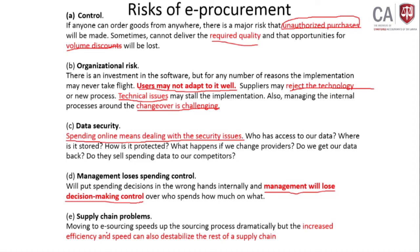Supply chain problems: efficiency and speed can also destabilize the rest of the supply chain. When you increase procurement efficiency, the supply chain that was previously manual must now keep up with e-procurement speeds. You will be able to procure many more goods than before, so your supply chain also has to operate in a good manner — otherwise it will fail.